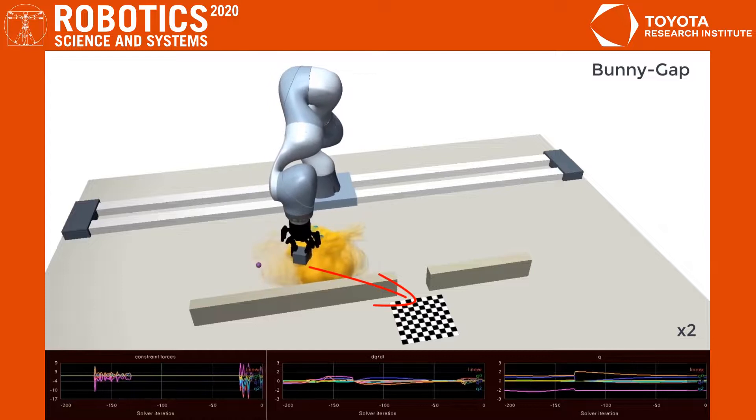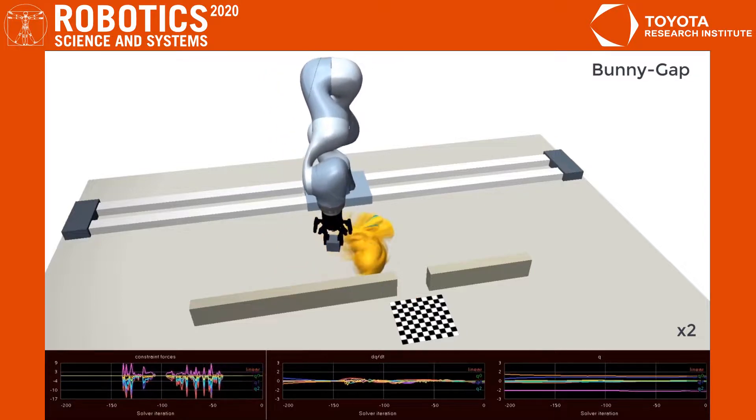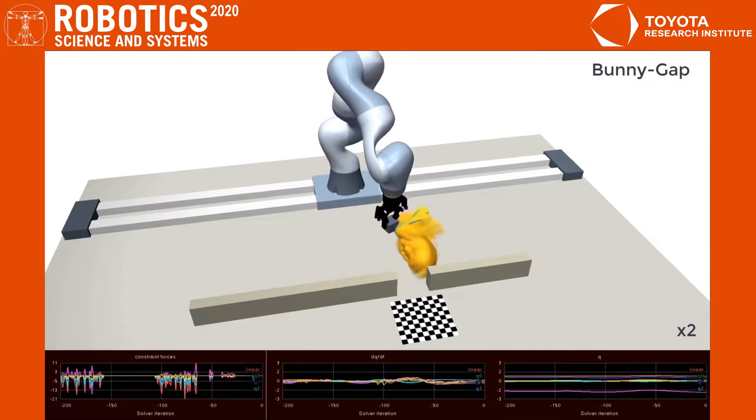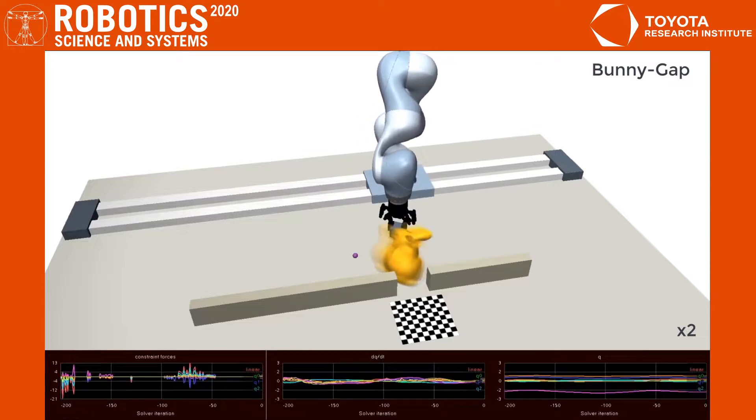In this task, the robot must push a bunny through a narrow gap. The bunny only fits through lengthwise. The robot must learn to align the bunny without knocking it over.